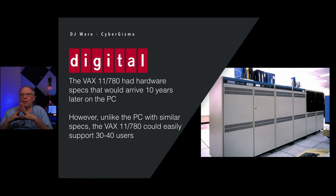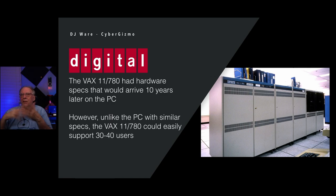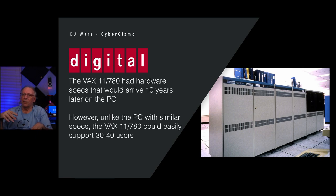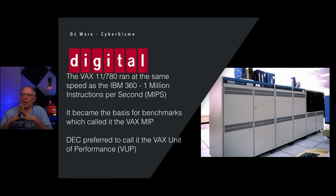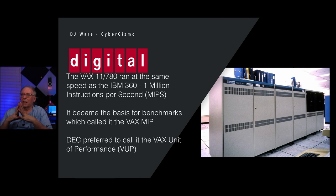By comparison, the best you could probably do on a PC server actually executing applications was maybe 8 or 10 users — I remember seeing a couple that did 12, but it didn't go much higher due to bandwidth limitations. The VAX 11780 ran at about the same speed as the IBM 360 — a million instructions per second on a machine that cost a tenth of what the 360 cost. You can see that DEC was definitely carving a nice niche out of IBM's market share.